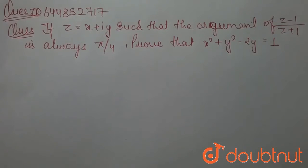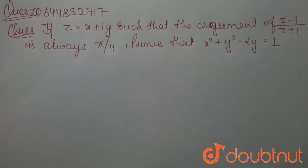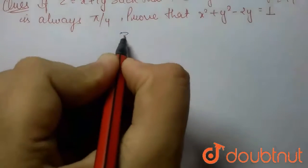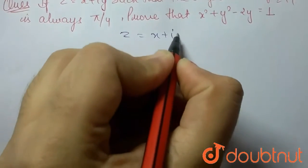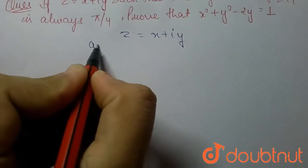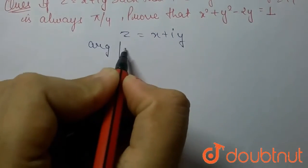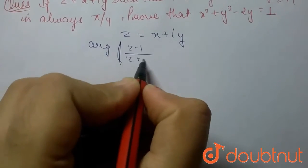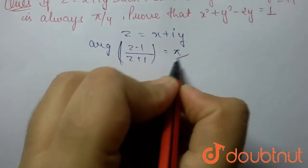Today's question: z equals x plus iy such that the argument of (z minus 1) upon (z plus 1) is always π/4. Prove that x² + y² - 2y = 1.